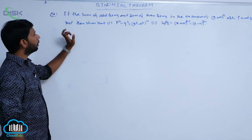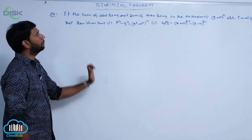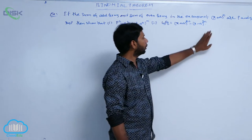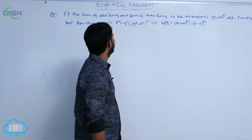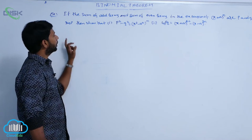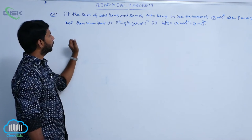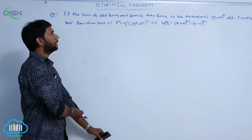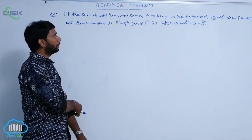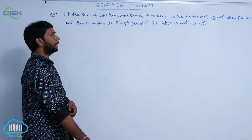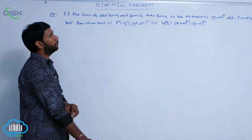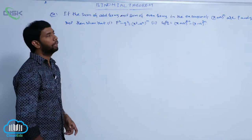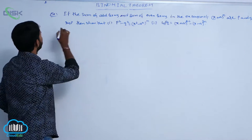Another example: given the sum of odd terms and sum of even terms in the expansion of (x + a)^n are p and q respectively, then show that p squared minus q squared is equal to (x squared minus a squared)^n. This is the first bit. The second bit is: 4pq is equal to (x + a)^2n minus (x - a)^2n.